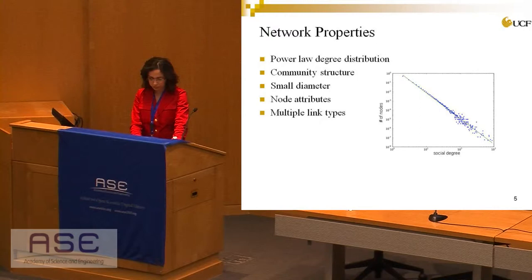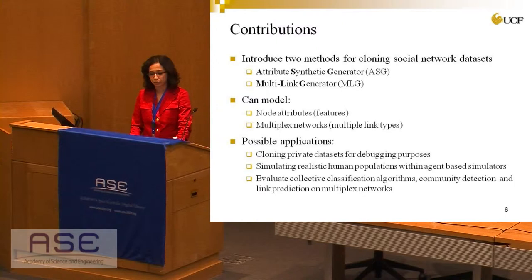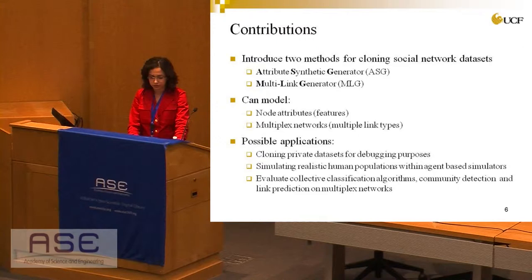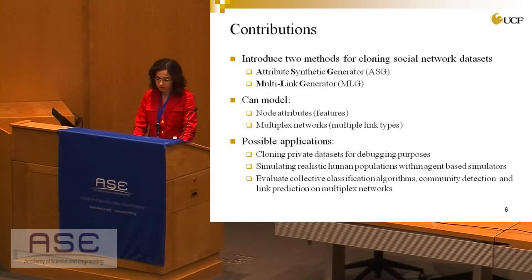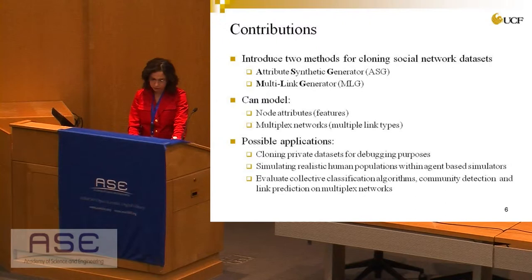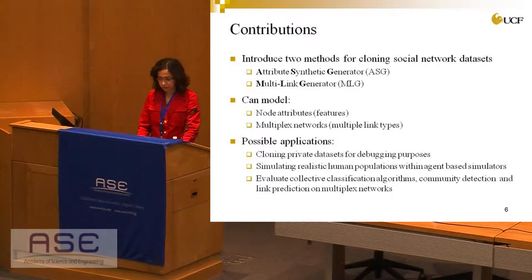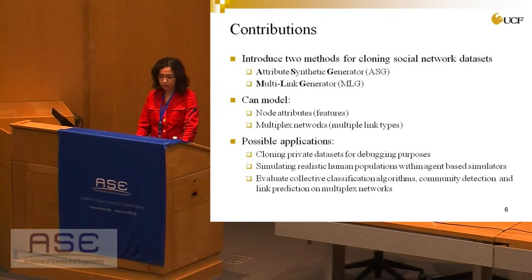In our contribution, we introduce two methods for cloning social network datasets. Our first generator, called ASG (Attribute Synthetic Generator), models node attributes, also called features. The second one is the Multilink Generator, which models multiplex networks with different relationship types. Applications include generating private datasets for debugging, simulating realistic human populations with agent-based simulators, evaluating collective classification algorithms, community detection, and link prediction on multiplex networks.